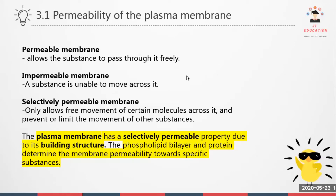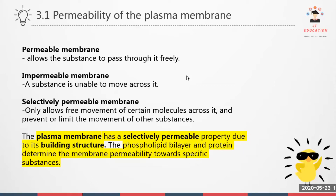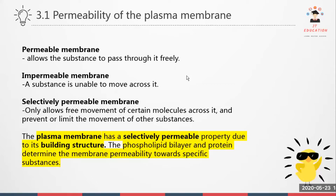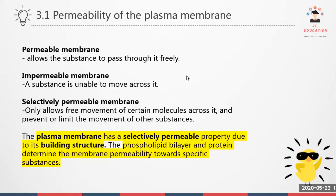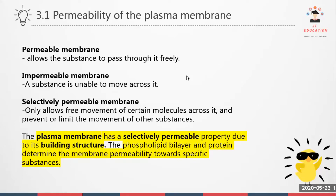Permeable membrane means it allows substances to pass through it freely, go and back freely. Impermeable membrane will be the opposite of permeable — the substances will be unable to move across it; nothing will be able to pass across it.